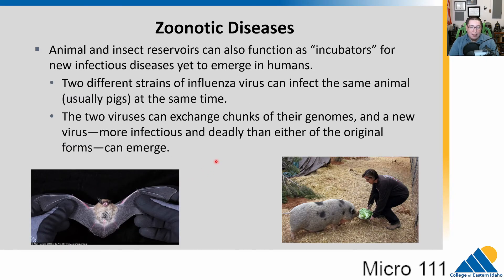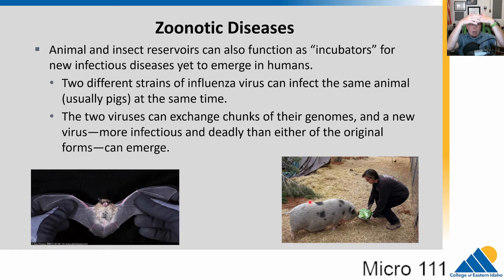Zoonotic diseases are where public health officials look for emerging diseases. SARS-CoV-2 is thought to have come from interactions between humans and bats. Influenza viruses are another example: two different strains can each infect a pig, recombine, and transfer bits of their genomes to create a more infectious, deadly strain that a farmer can contract from the pig — potentially leading to an epidemic or pandemic. We've seen this with bird flu and H1N1.